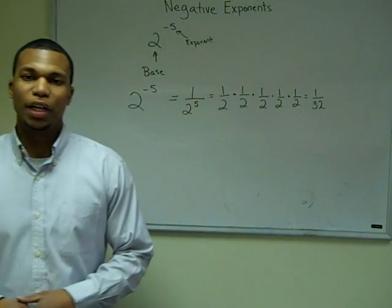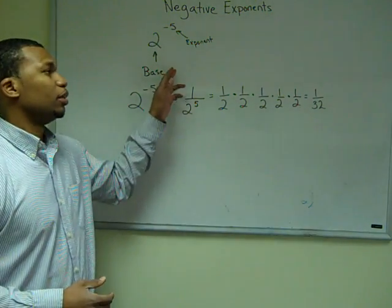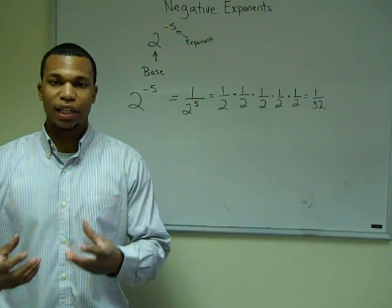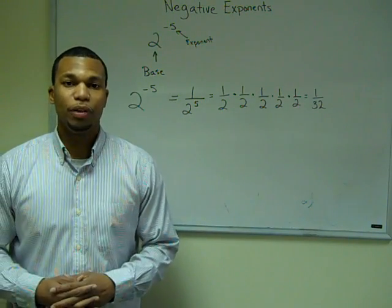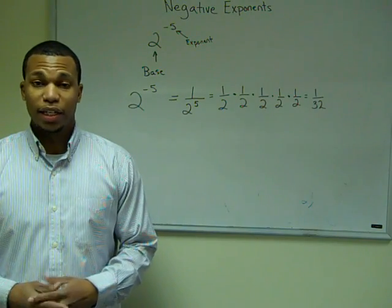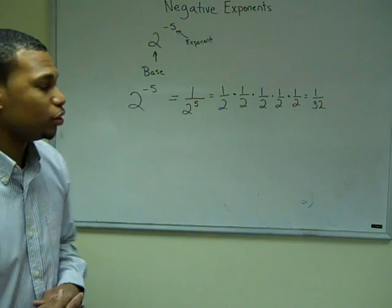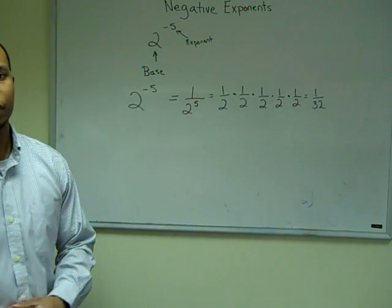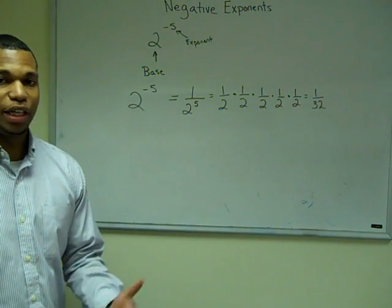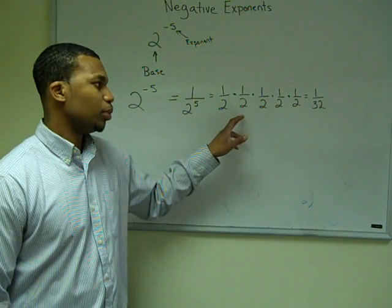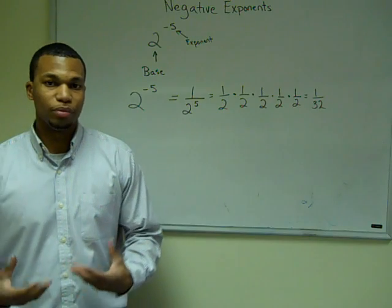Now let's talk about negative exponents. When we have a base raised to a negative exponent, we find the positive value first, and then we find the reciprocal. So if I take two to the negative fifth, that's the same as one over two to the fifth, which is one half times one half times one half times one half times one half, giving me one over 32.